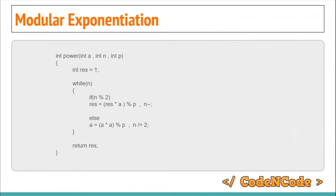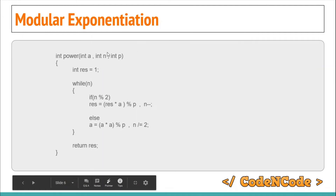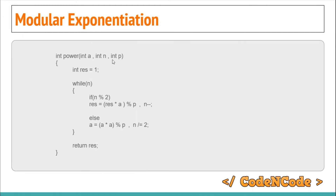This is modular exponentiation. In some cases you have to calculate a raised to power n modulo some prime number p. You simply modify the code slightly: when n is odd, set result = (result × a) mod p; when squaring, set a = (a × a) mod p, then divide n by 2. Finally return result. This computes a raised to power n modulo p and still runs in O(log n) time.